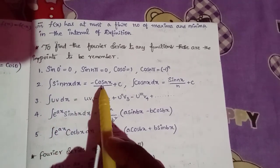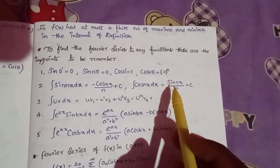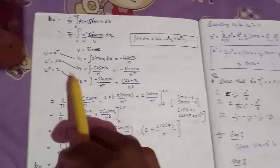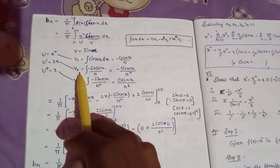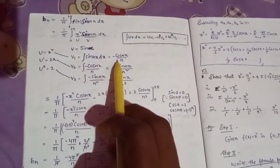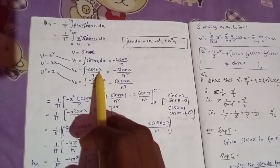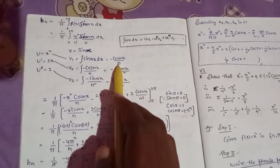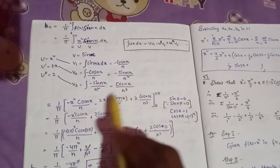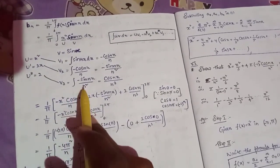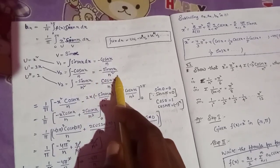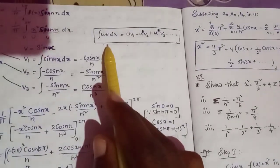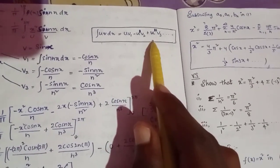Integration of sin(nx) dx is equal to minus cos(nx) divided by n plus c. Integration of cos(nx) dx is equal to sin(nx) divided by n plus c. Using the UV formula: v1 is minus cos(nx)/n, v2 is minus sin(nx)/n², v3 is cos(nx)/n³. The UV integration formula is: integral of uv dx = u·v1 minus u'·v2 plus u''·v3.